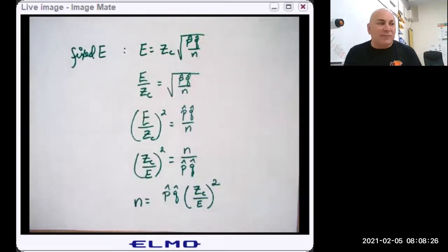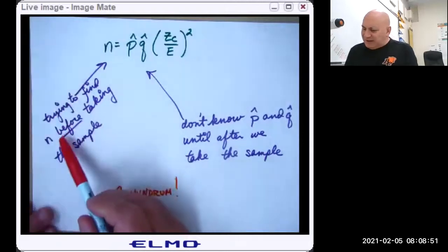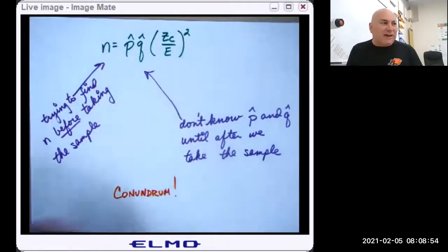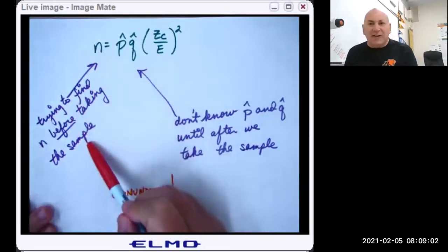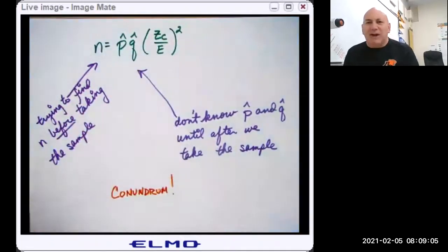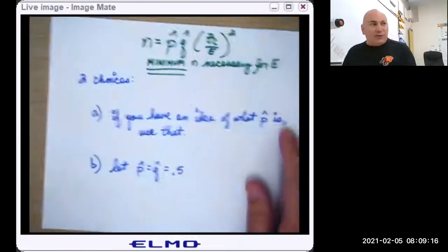So solving for N, I get this expression. Please, rather than just writing it down, work through it, make sure you understand the algebra. There's a little problem with that formula though. Did you catch it? Go back and take a look. Did you catch the error, the problem? It's not a math error. We're trying to find the N, that sample size. How big does our sample have to be in order to get that fixed margin of error? We're trying to determine that before we take the sample, but we don't know P hat and Q hat until after we take the sample. This presents a conundrum.